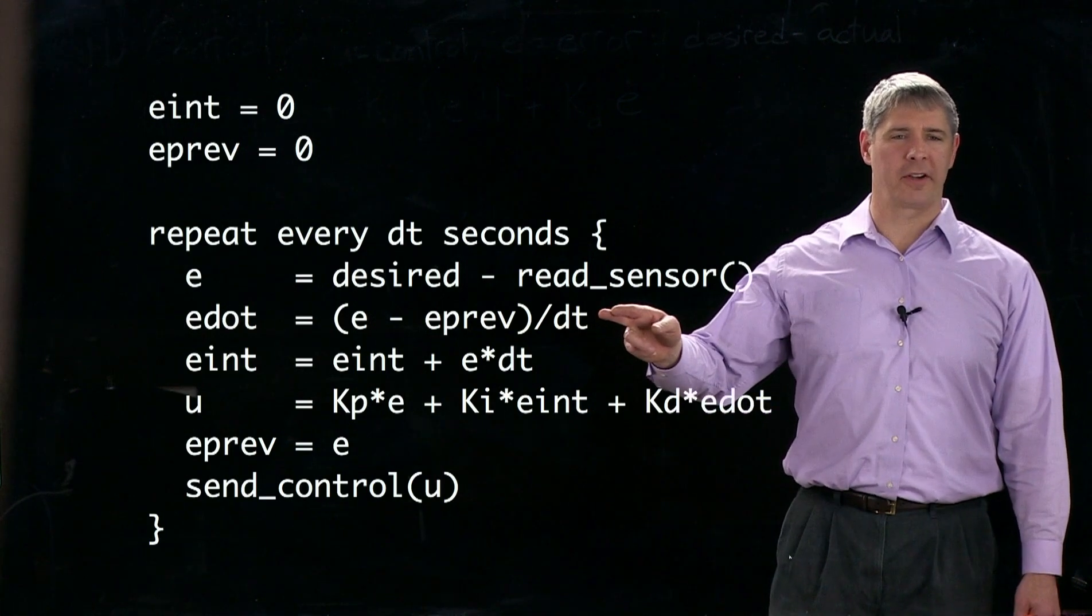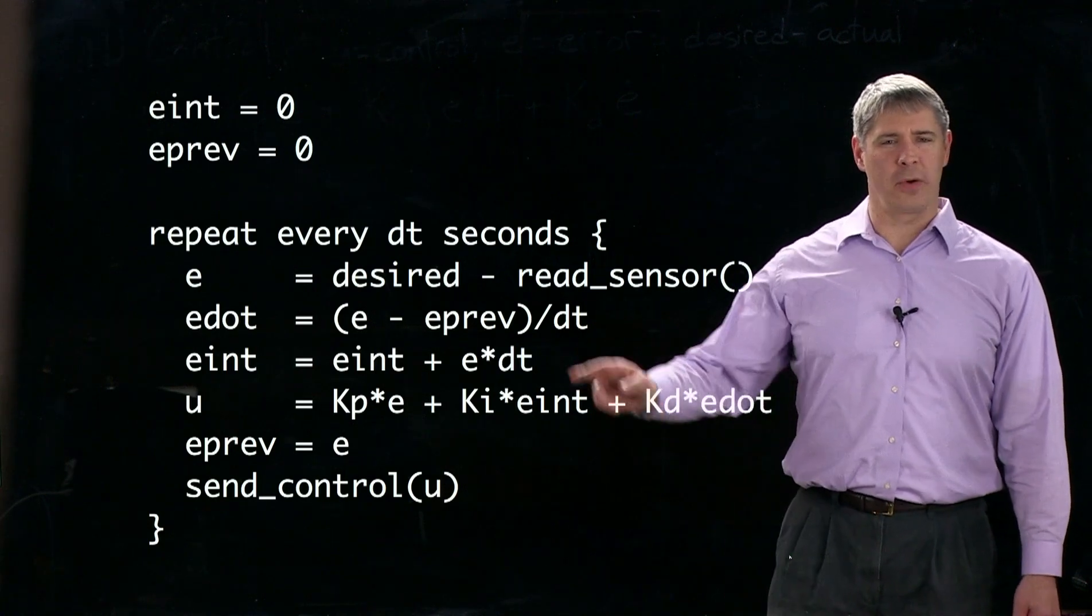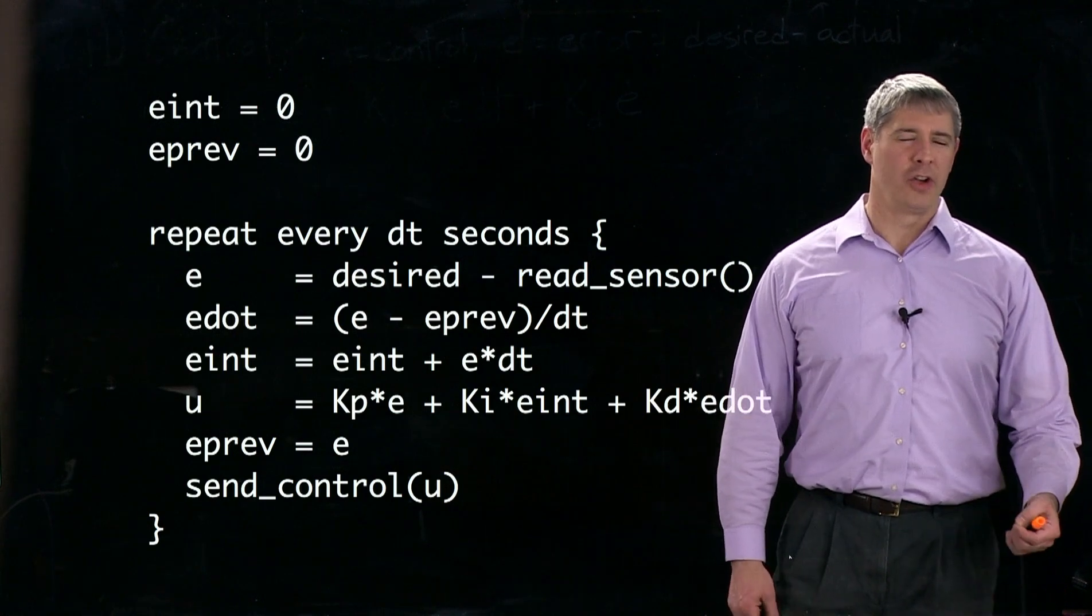So here in this line, we're calculating the derivative of the error, and if there's any noise at all in our sensor reading routine, for instance, we might have some noisy sensor,